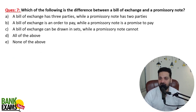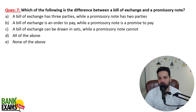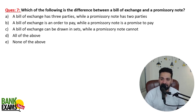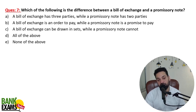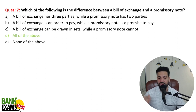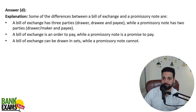Which of the following is a difference between a bill of exchange and a promissory note? A bill of exchange has three parties while a promissory note has two parties. A bill of exchange is an order to pay while a promissory note is a promise to pay. A bill of exchange can be drawn in sets; a promissory note cannot. All of these differences are correct.